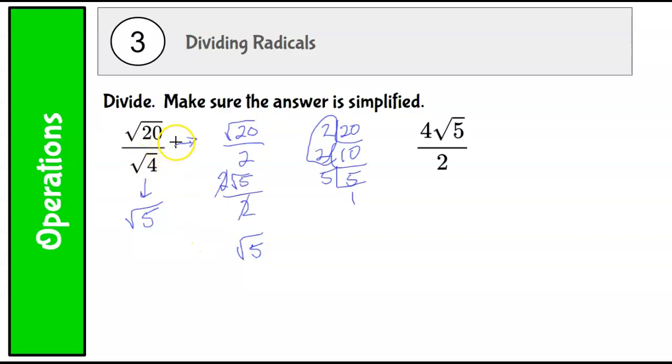You also might have thought about rationalizing the denominator. But I wouldn't go rationalizing the denominator until you check and make sure that the denominator isn't already a perfect square. And it is already a perfect square, so I can just go ahead and take the square root of it or I can divide it into 20. Okay, so this is the answer to that one. And then one more. We have 4 square roots of 5 over 2. Do you see what you could do? 4 divided by 2 is 2. And that's it.